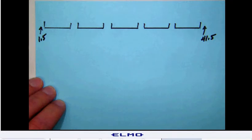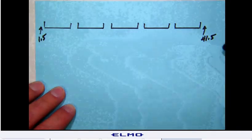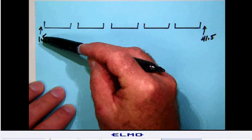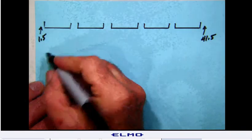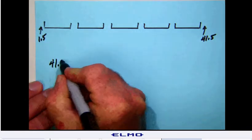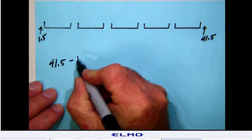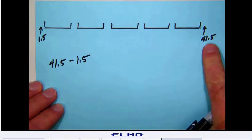Notice that we know that there are five classes, but this time they don't tell us the class width. So the first thing we need to do is to figure that out. Notice that the amount of space from 1.5 to 41.5 can be calculated by simply taking the bigger number, 41.5, subtracting the smaller number, 1.5.